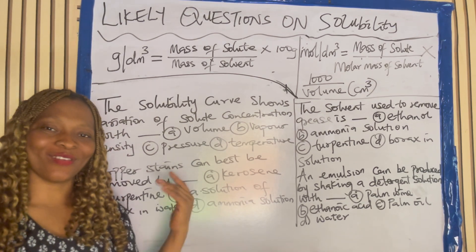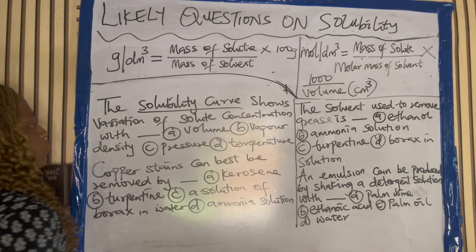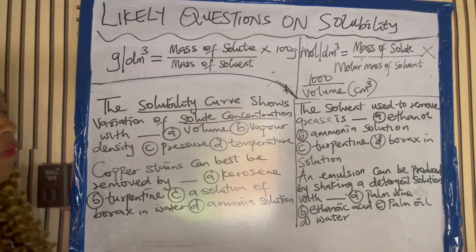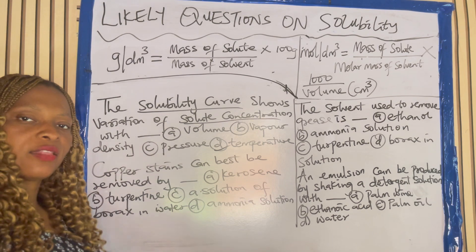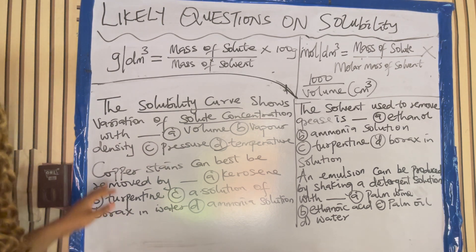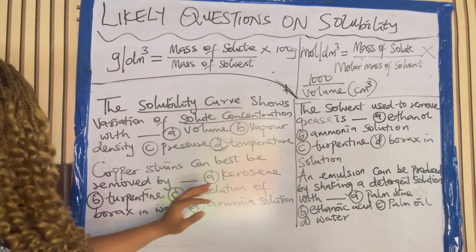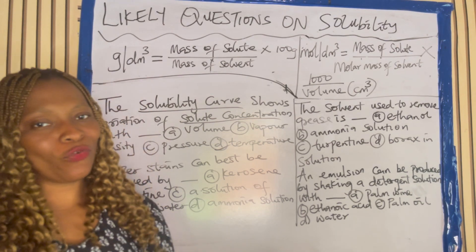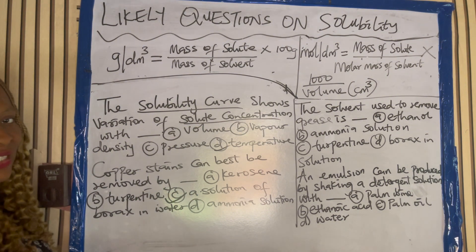Let's look at some theory questions on solubility. The solubility curve shows variation of solute concentration with temperature. When you draw the curve, you are showing concentration versus the temperature at which they dissolve. Copper stains can best be removed by — is it kerosene, turpentine, a solution of borax and water, or ammonia solution? The best way to remove copper stains is by using a solution of borax and water.